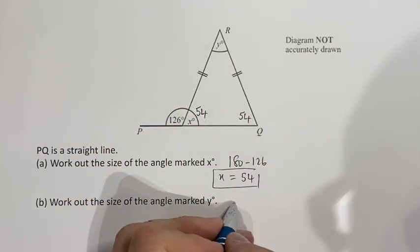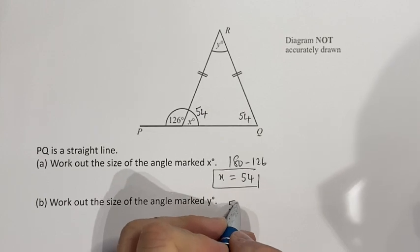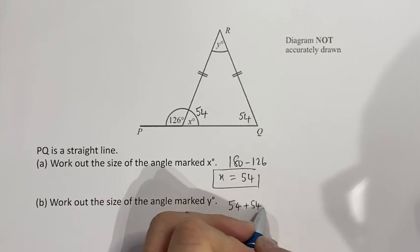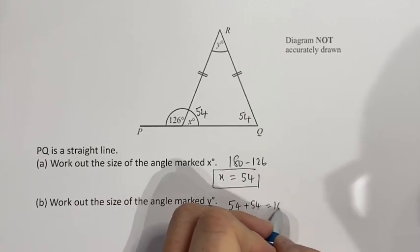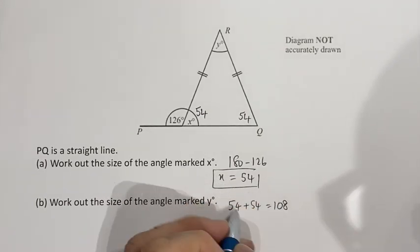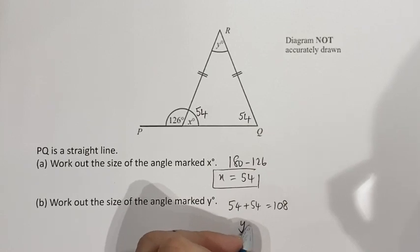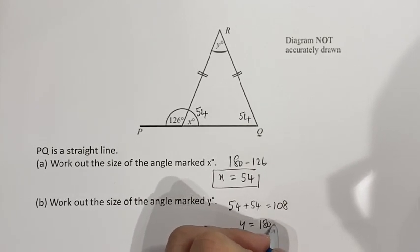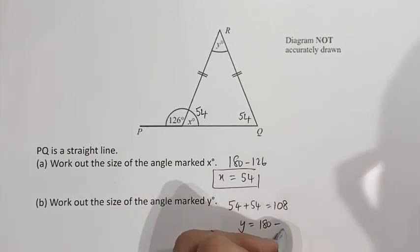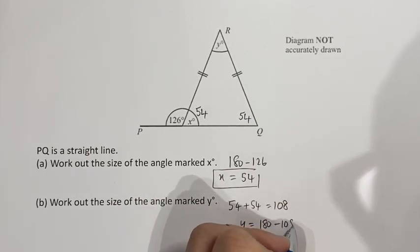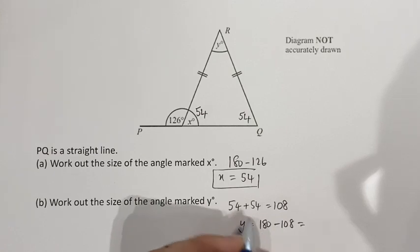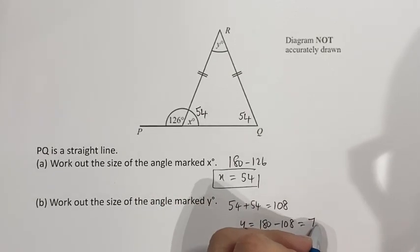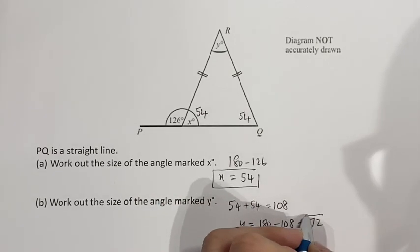Now 54 plus another 54 makes 108, so therefore y will equal 180 take 108, giving y equals 72 degrees.